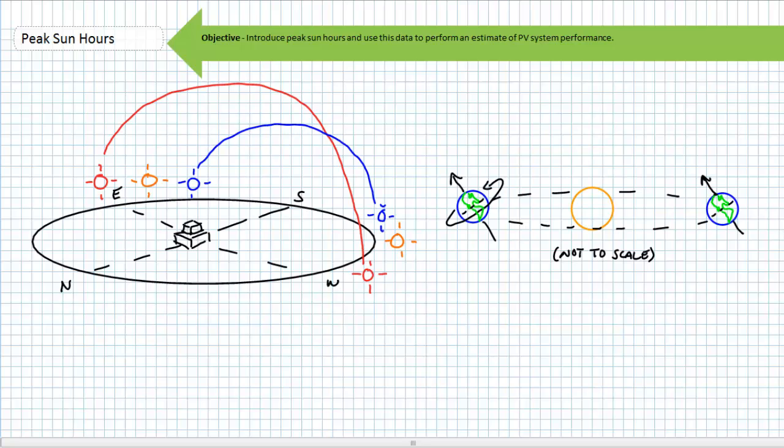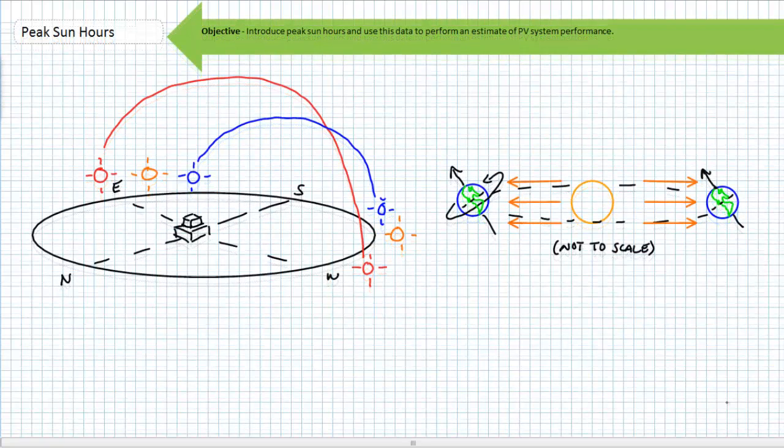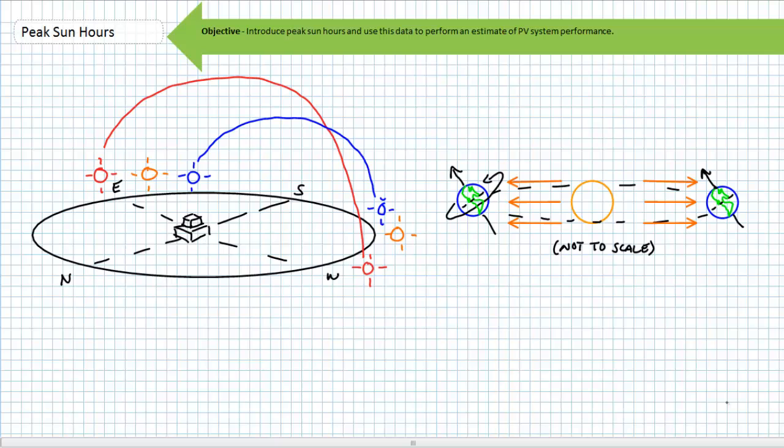Given our distance from the sun, we can assume rays of radiant energy arrive in parallel lines. Because radiant energy is striking more normal to the northern hemisphere during summer months, the summer is obviously warmer.